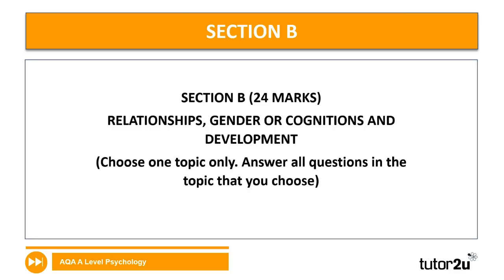That concludes Section A on issues and debates. We're now moving to Section B, also worth 24 marks. In your paper you'll have the option of relationships, gender, or cognition and development — you will have only studied one of these at your centre, so answer just the one you have been taught. We're going to go through questions from all three, but you can skip the ones you haven't been taught and focus on yours.